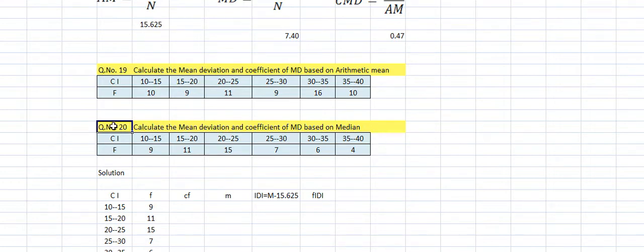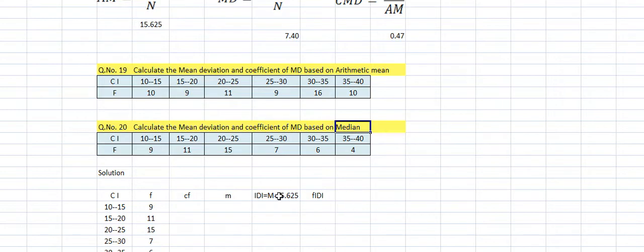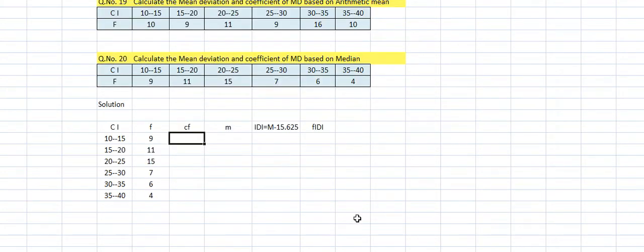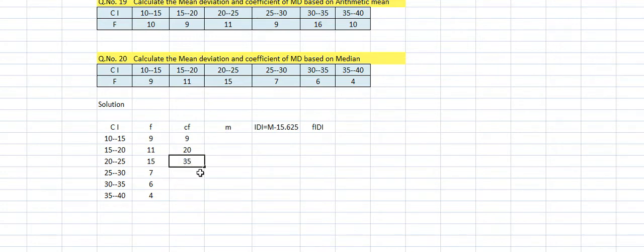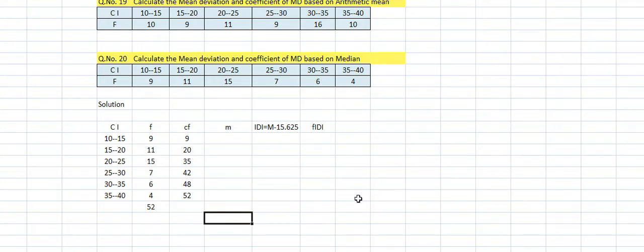Now question number 20: calculate the mean deviation and coefficient of mean deviation based on median. First we need the cumulative frequency (CF). The CF values are: 9, 20, 35, 42, 48, 52. Total N is 52.